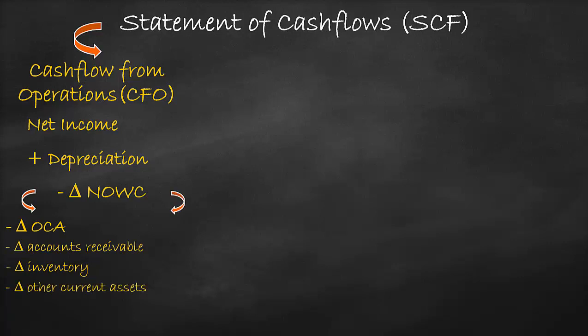We add the change in operating current liabilities, as the positive sign refers to a positive relationship between change in cash and the change in liabilities. This means that higher liabilities results in higher cash and lower liabilities results in lower cash. Examples of change in operating current liabilities are change in accounts payable or change in other current liabilities. Then we sum all these items together to get the net cash flow from operations.